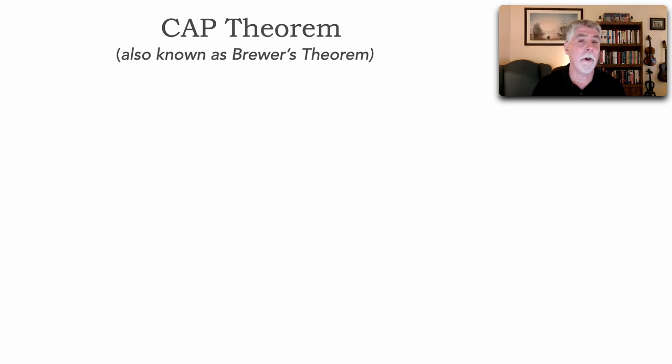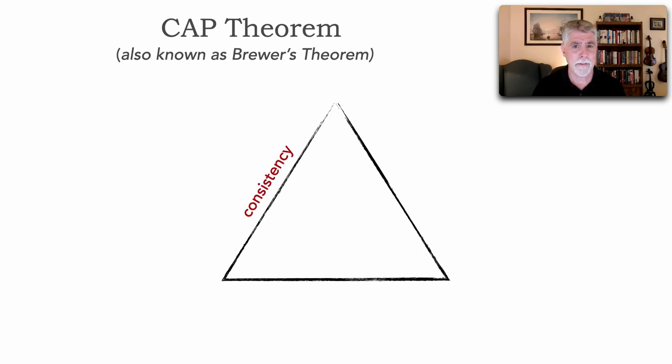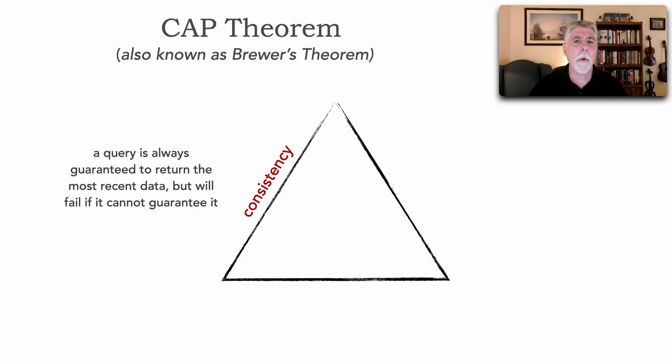CAP Theorem, also known as Brewer's Theorem, states the following. Within any given system we could have consistency. Consistency, the C part of CAP Theorem, is defined as a query is always guaranteed to return the latest updated value, the latest data, and if it can't, it will return an error if it can't guarantee that's the latest information.